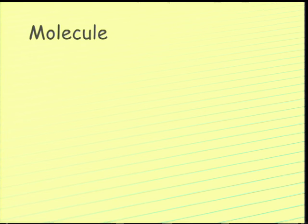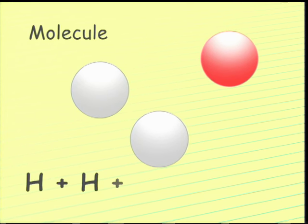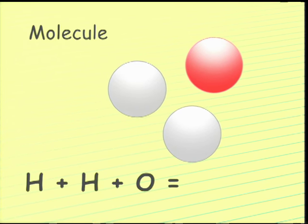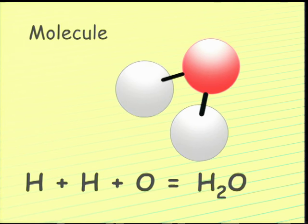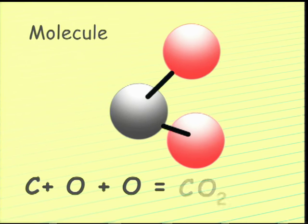When atoms of two or more elements are bonded together to form a compound, the resulting particle is called a molecule. For example, when two atoms of hydrogen and one of oxygen combine, a molecule of water is formed. When one atom of carbon and two of oxygen combine, a molecule of carbon dioxide is formed.